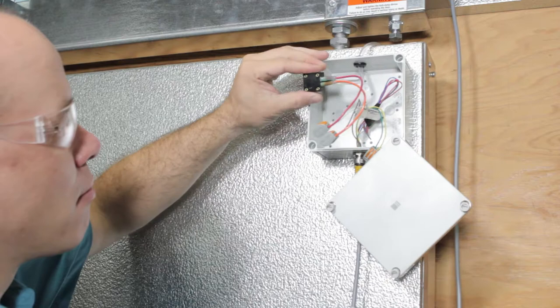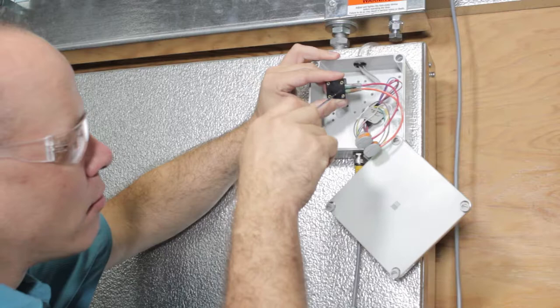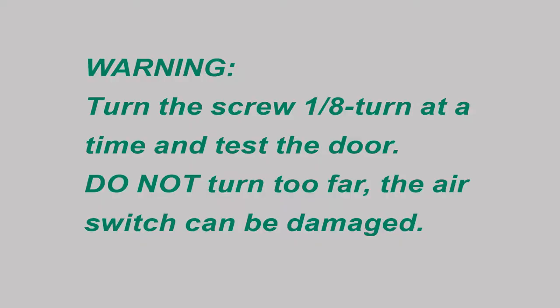Locate the air switch and using the small flathead screwdriver, turn the set screw one eighth of a turn. Clockwise increases sensitivity. Counterclockwise decreases sensitivity.